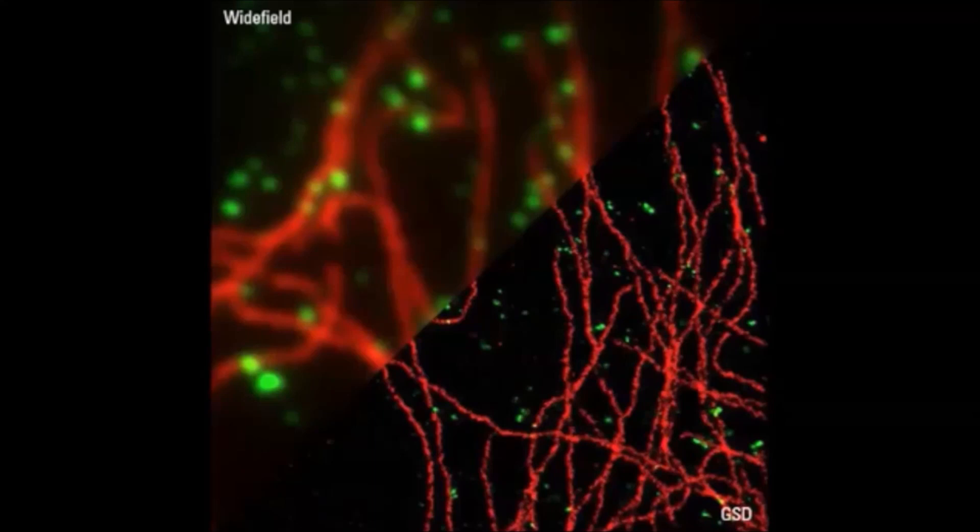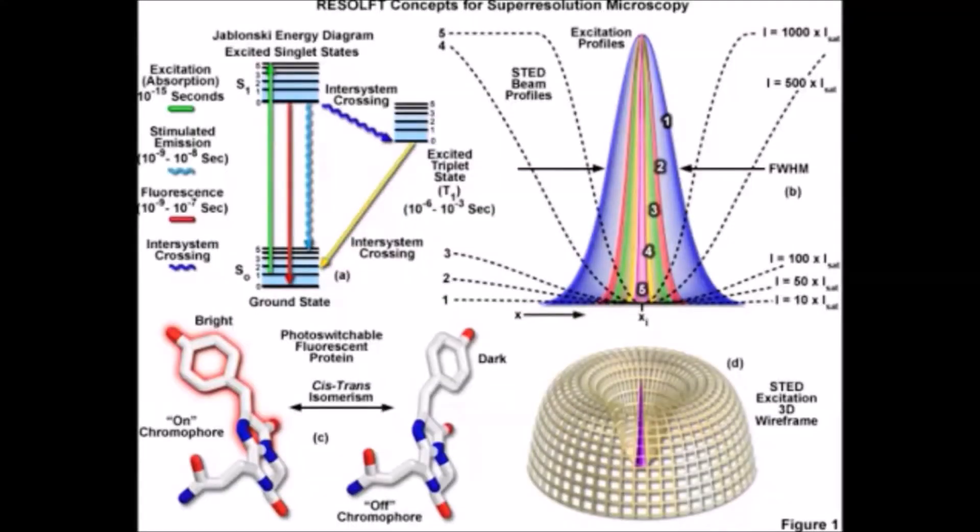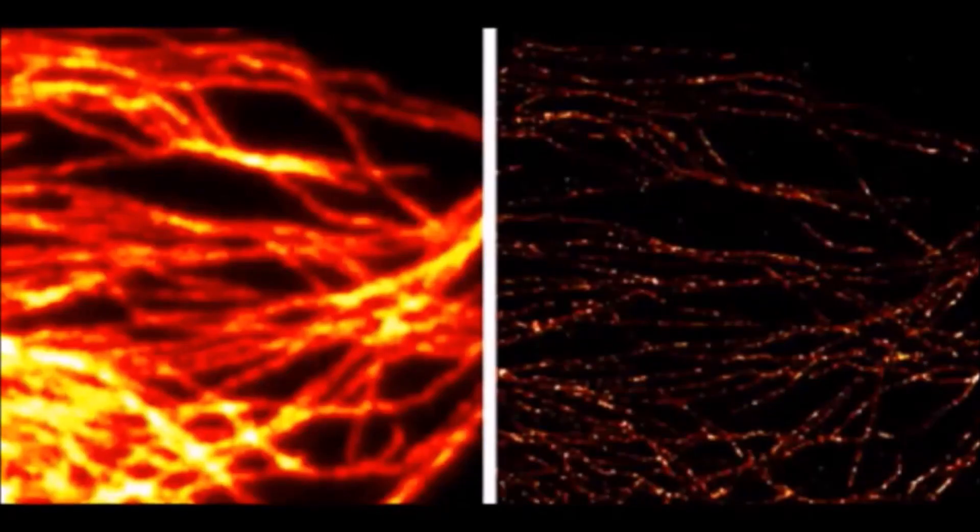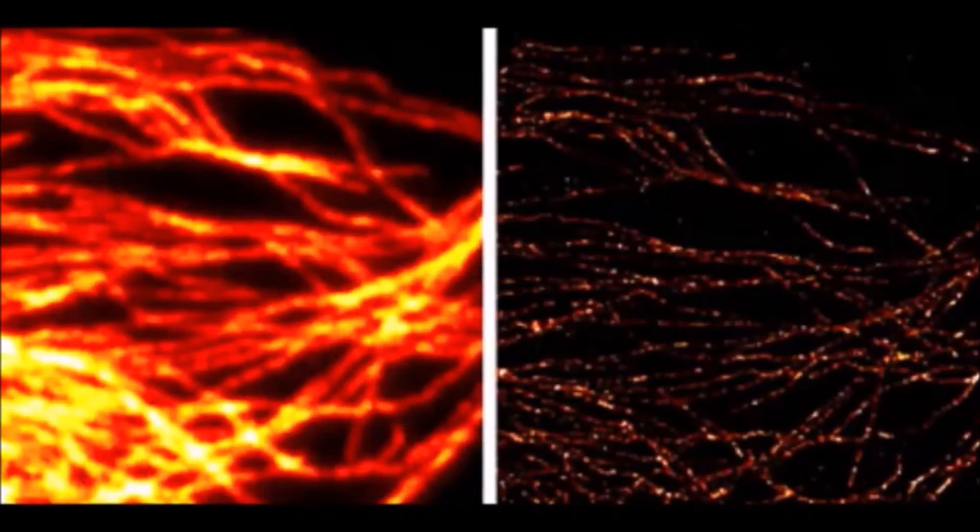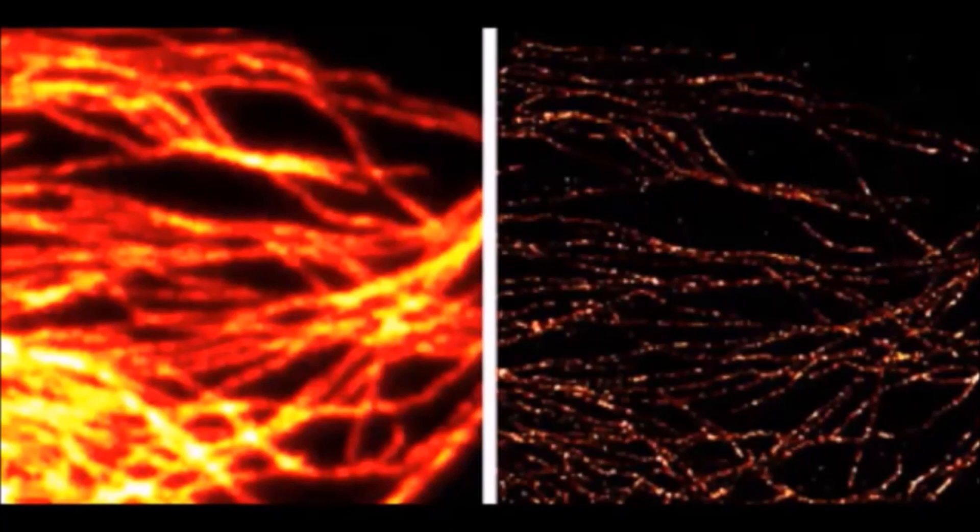The third and most recent method Dr. Hell and his team developed is called the Resolved Reversible Saturable Optical Fluorescence Transition Method. There does not seem to be a commercial unit available yet. What we show here is again a contrast between conventional fluorescent microscopy and the Resolve method. This method brings the effective magnification with resolution up to about 20,000x.